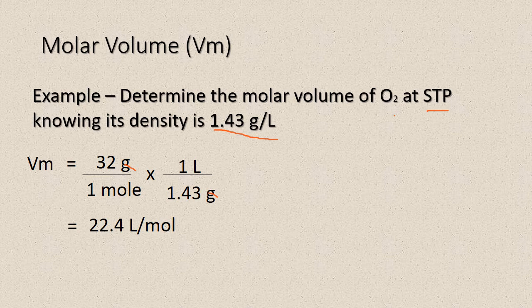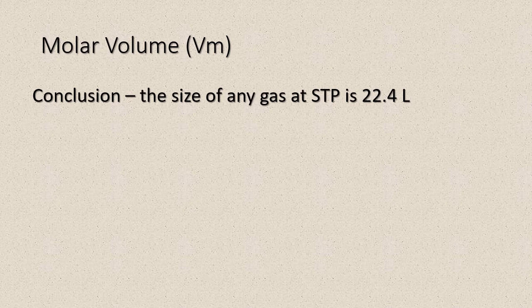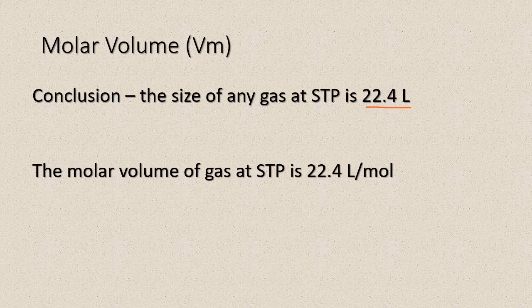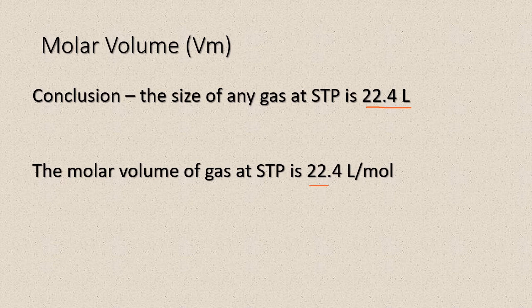And what we're left with is 22.4 liters per mole. Once again, we have that magic number. So our discovery here is that if we're at STP, that's in terms of volume, that's how big our gas is. So STP is 22.4 liters per mole. So if you had one mole, it would be that big. If you had two moles, you would double it. If you had half a mole, it would be 11.2. It would be half the amount.